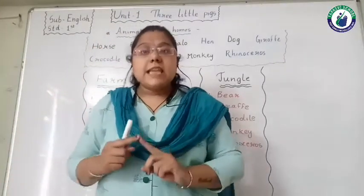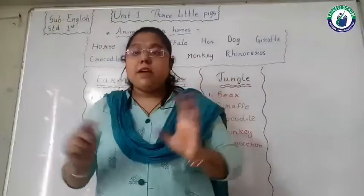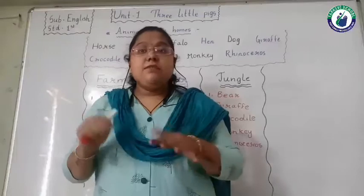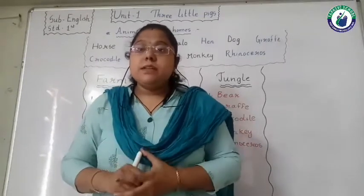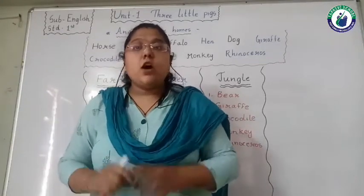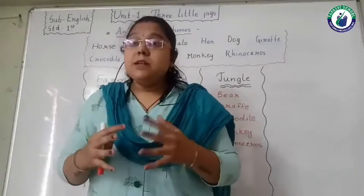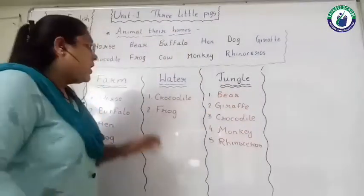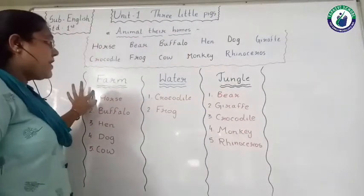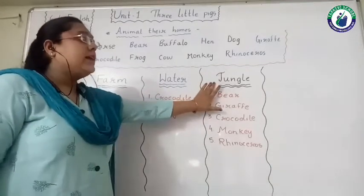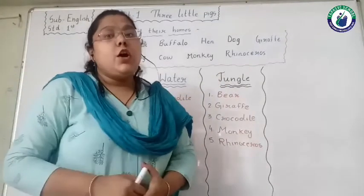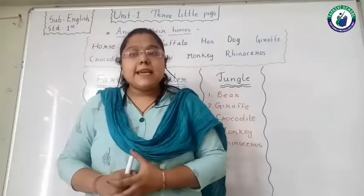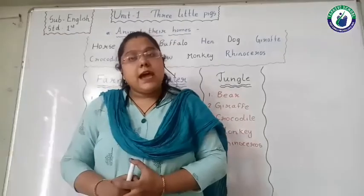Again, the animals which we can see near our house are farm animals, also called domestic animals. Second, water animals — they live in water only. Third, jungle animals or wild animals — wild animals live in the jungle. So to repeat: domestic animals live on the farm, water animals live in water, wild animals live in the jungle. Hope in this lecture you have understood animals and their homes. Till next lecture, bye bye everyone, take care and have a nice day.